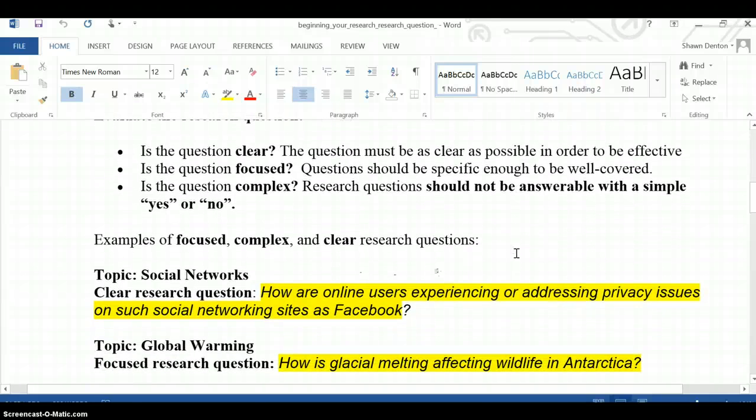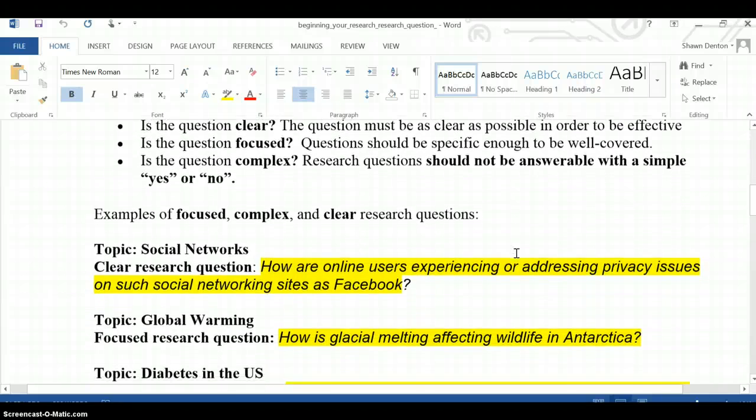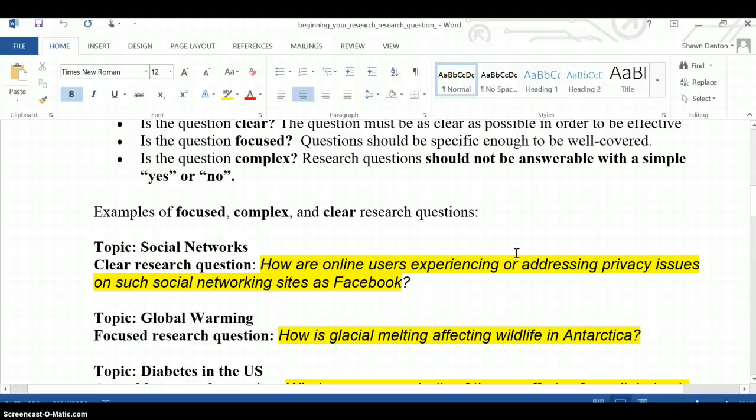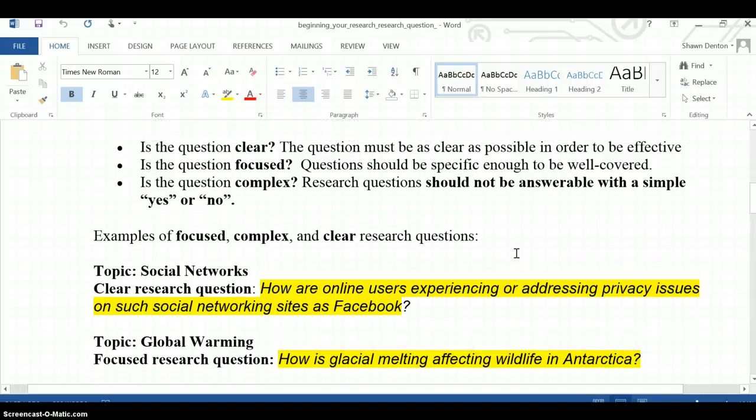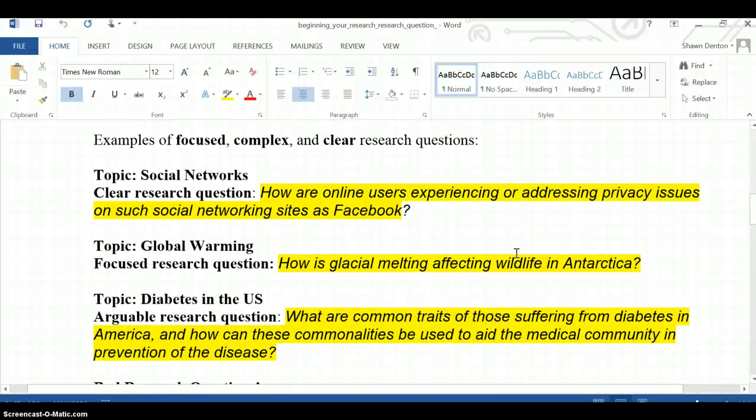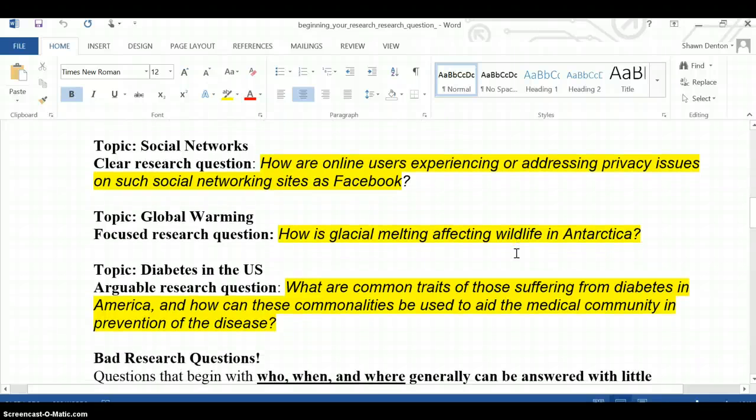Now, research questions should be clear. They should be focused and complex, meaning they should not be answerable with a simple yes or no question. Clear, meaning they're as clear as possible to be effective. Focused, they're specific enough to be well-covered, and once again, complex not to be answered with a simple yes or no question. Here's some examples for you. They're focused, they're complex, and they're clear. We have social networks, we have global warming, and we have diabetes in the U.S. as your particular topics.